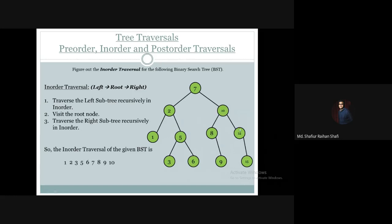Then our responsibility is to visit the right subtree of 10. The right subtree root is 12. Node 12 has no left subtree, so we directly visit the root which is 12 and print it. This completes the in-order traversal of the given binary search tree.